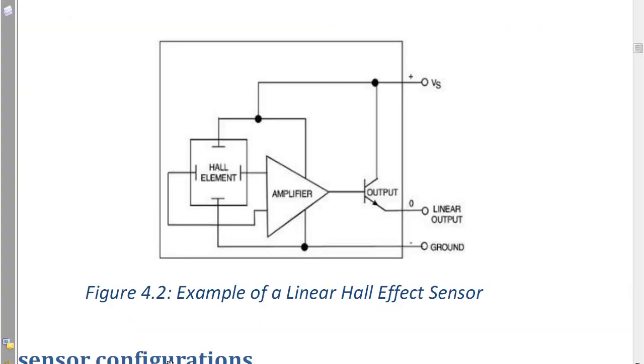Here is a simplified diagram of a more commercial Hall ratiometric or linear Hall sensor. Again, here is your Hall plate, here's your differential amplifier, and it's usually some kind of emitter follower output. This is of course analog, not digital. With no magnetic flux, it's usually sitting around half of VS or what I call VCC.